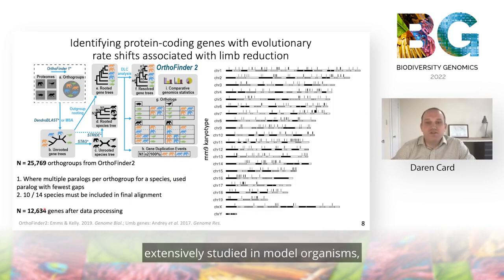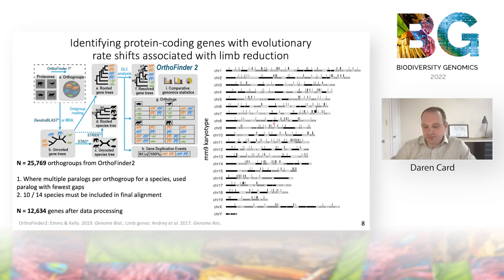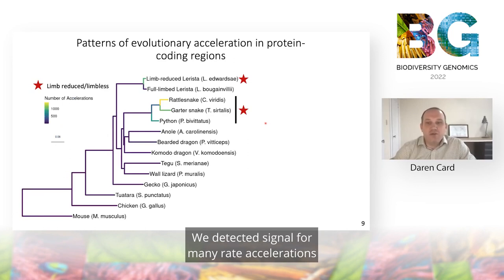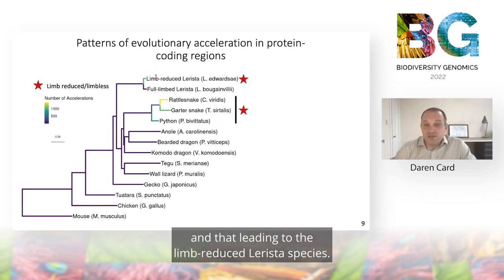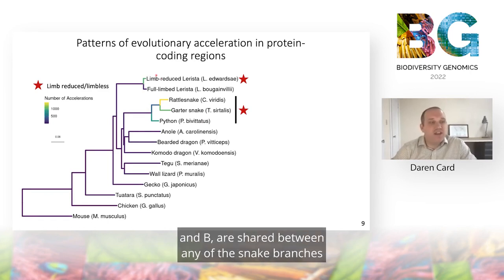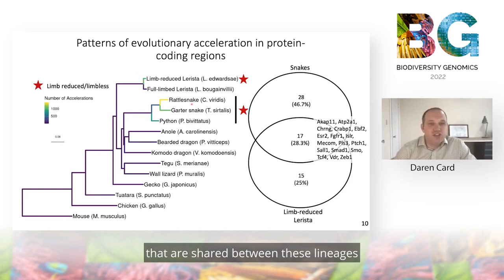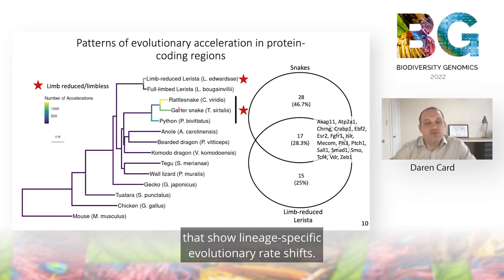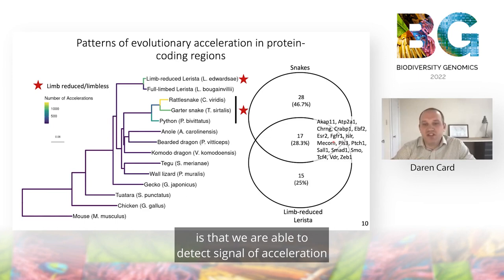Given that limb reduction has been extensively studied in model organisms, we cross-referenced our PhyloACC results with 433 genes putatively involved in limb development, to see how much signal we could detect for evolutionary rate shifts in known limb genes. We detected signal for many rate accelerations on specific branches of the phylogeny, namely those leading to the snake species and to the limb-reduced Larista species. We found a total of 17 genes shared between these lineages, plus one to two dozen other genes showing lineage-specific evolutionary rate shifts—the big take-home being that we can detect signal of acceleration at several genes involved in limb development in both snakes and the limb-reduced Larista.